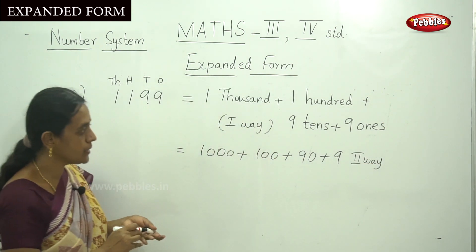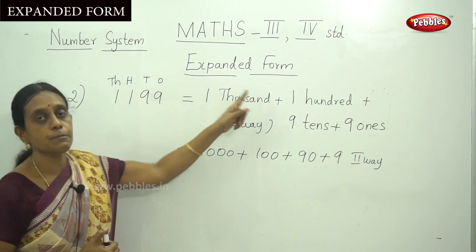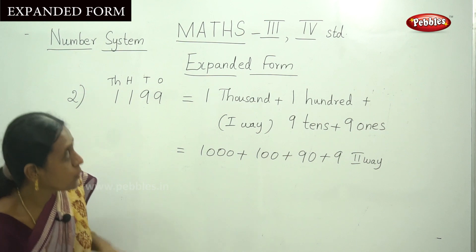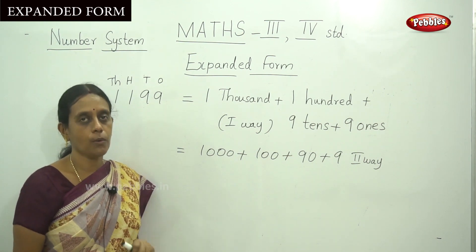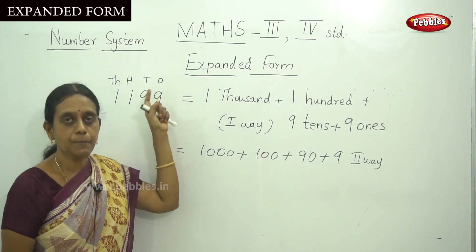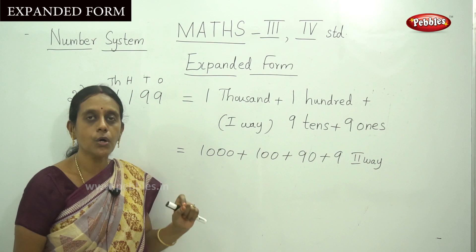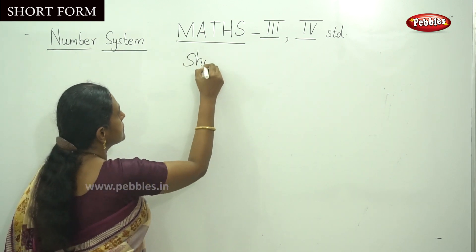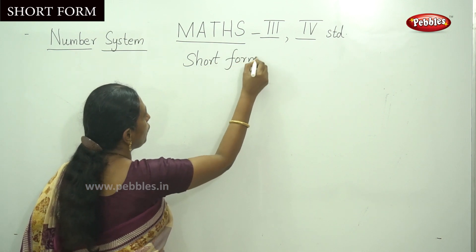So this is a method to write down the number — that is expanded form. Now we have discussed this, it is called expanded form, and the next method is short form.